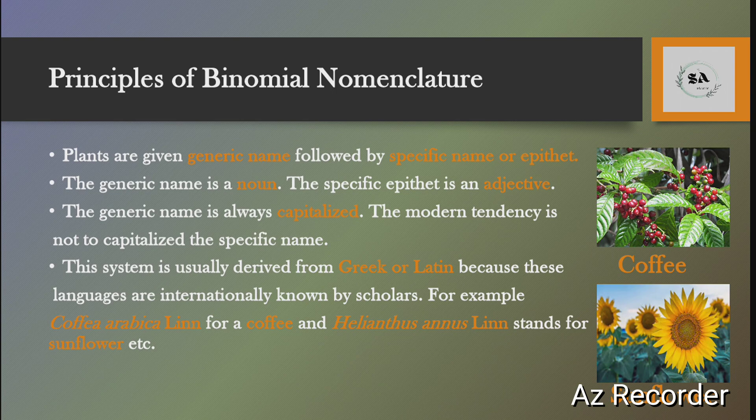For example, the scientific name of coffee is Coffea arabica Linn., and the scientific name for sunflower is Helianthus annuus Linn. In Coffea arabica Linn., 'Coffea' is the generic name, 'arabica' is the specific name, and 'Linn.' is the abbreviation for the scientist Linnaeus. Similarly, in Helianthus annuus Linn., 'Helianthus' is the generic name, 'annuus' is the specific name, and 'Linn.' is the name of the scientist.